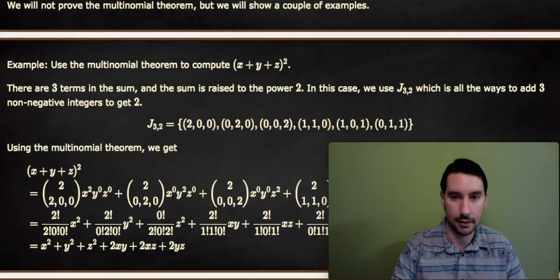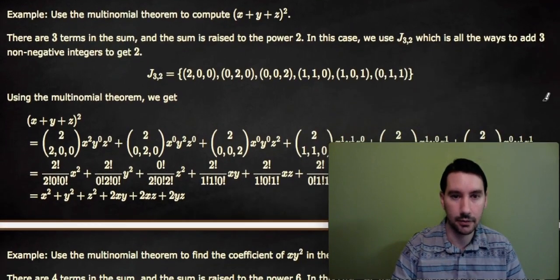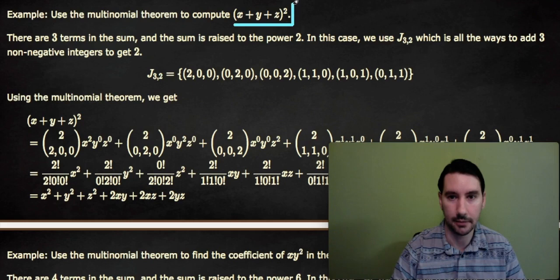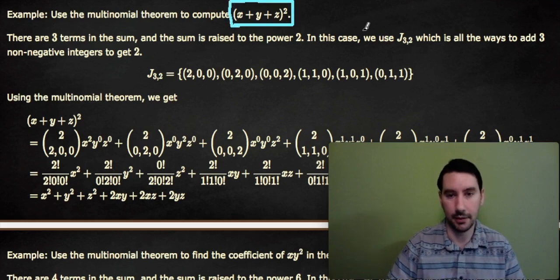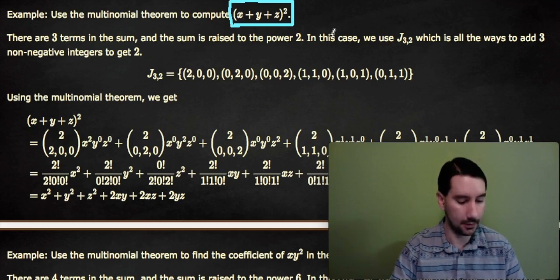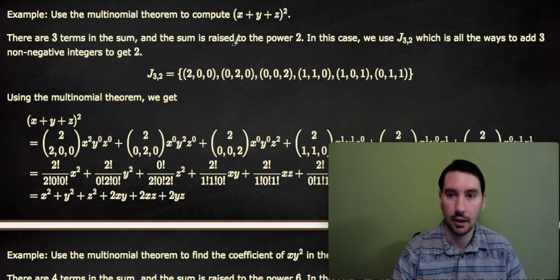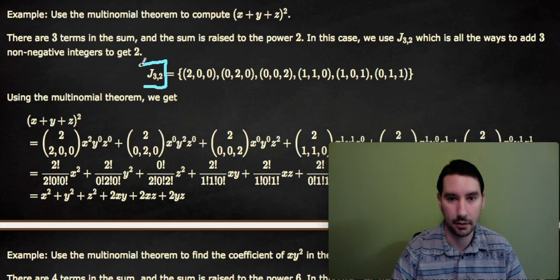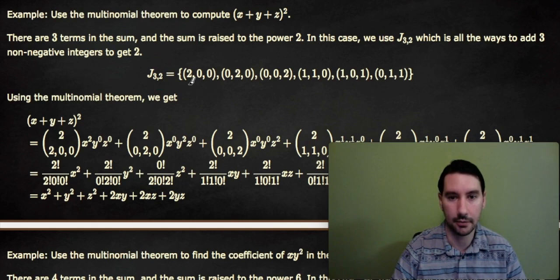So let's take an example. We're going to use the multinomial theorem to compute (x + y + z)². So all that fancy notation above means something like this. So we have three variables that we're adding together, and we're going to raise them to a power. So (x + y + z)² could be expanded. And so we have three terms, and it's raised to the power of 2. So we're looking at J₃₂ for our tuples, which means we have three points, and they're all bigger than or equal to 0, and they all have to add up to 2.